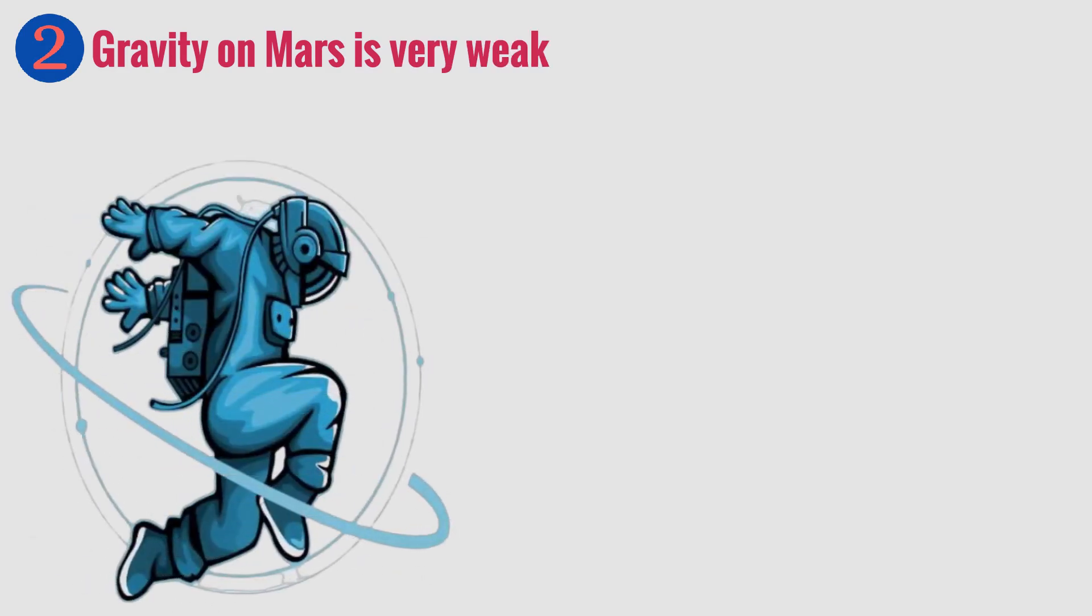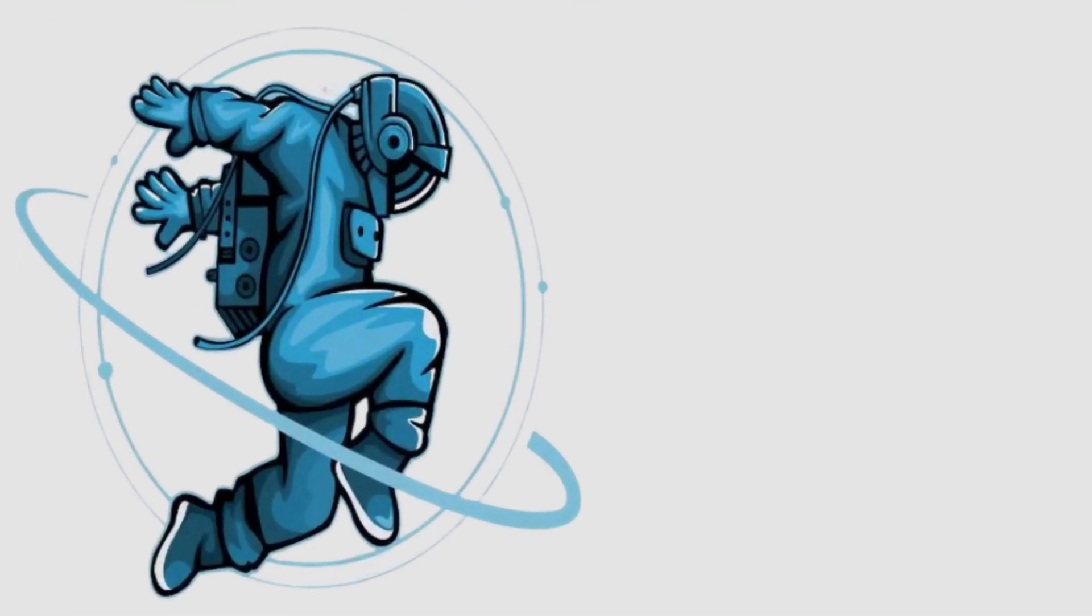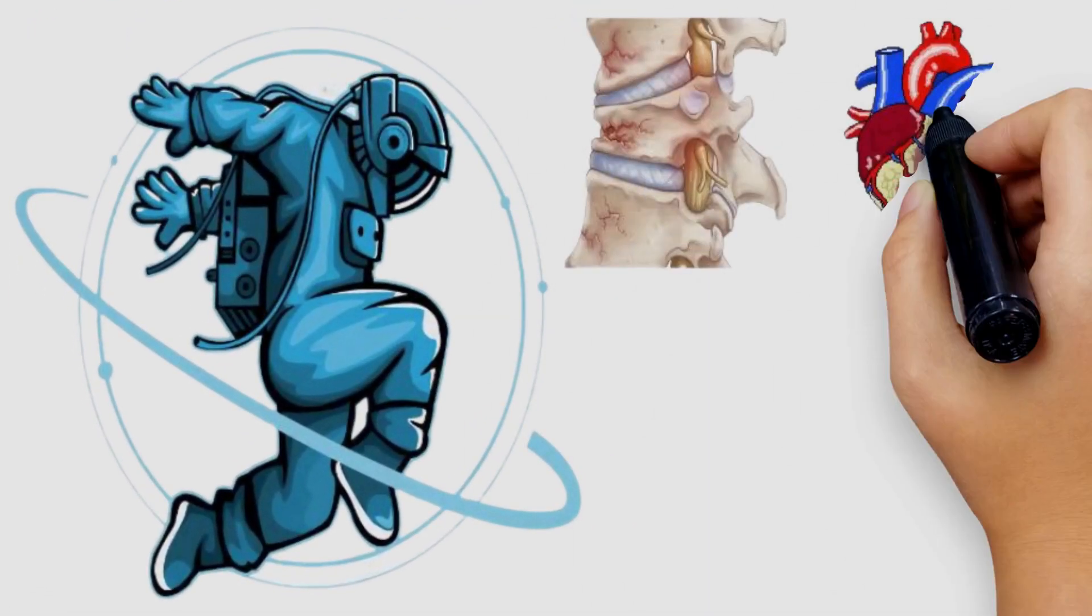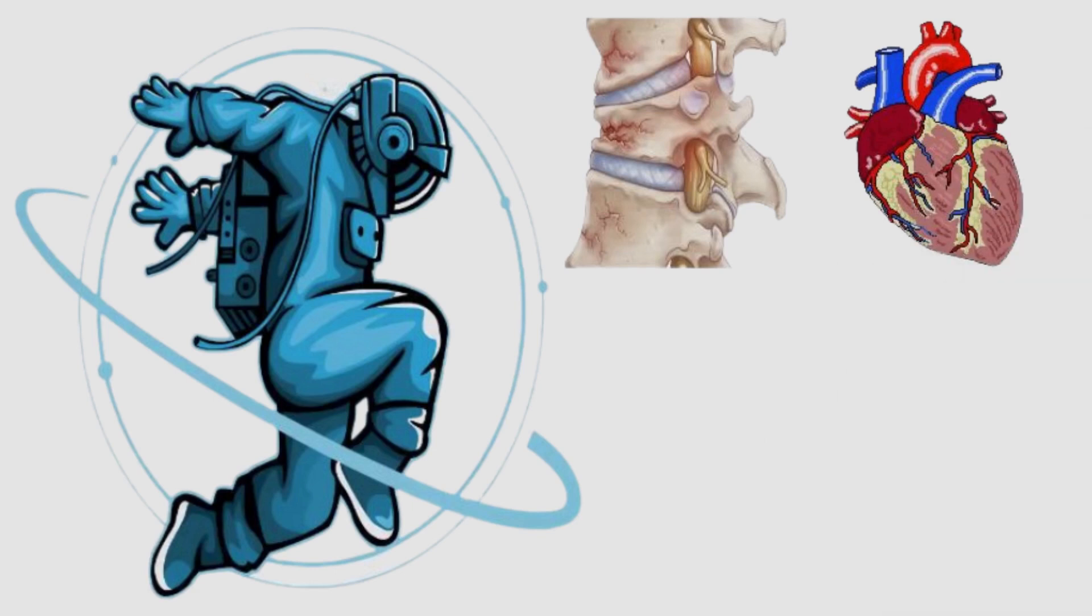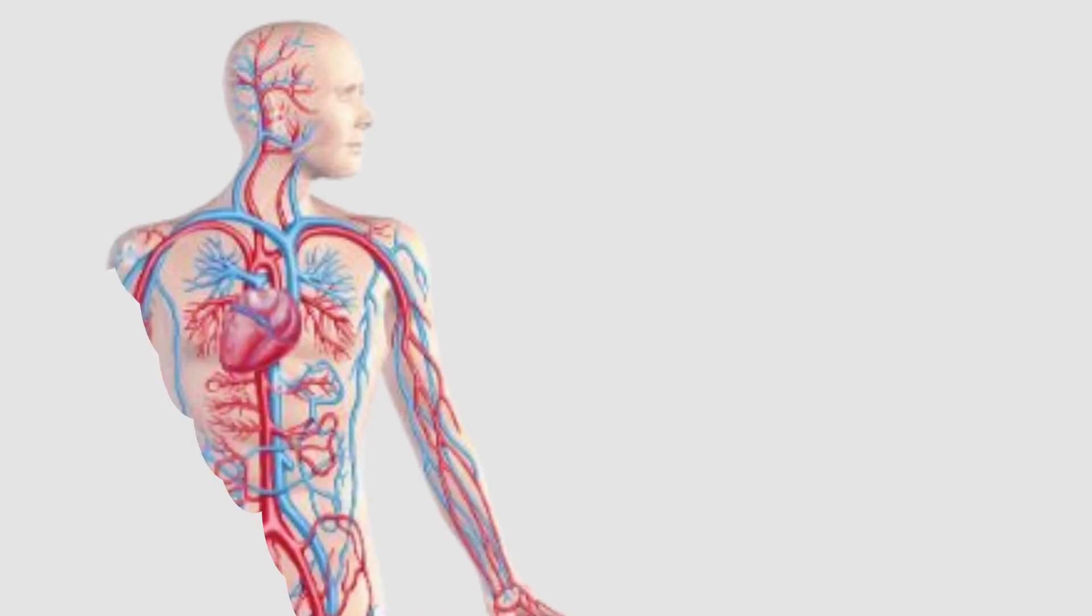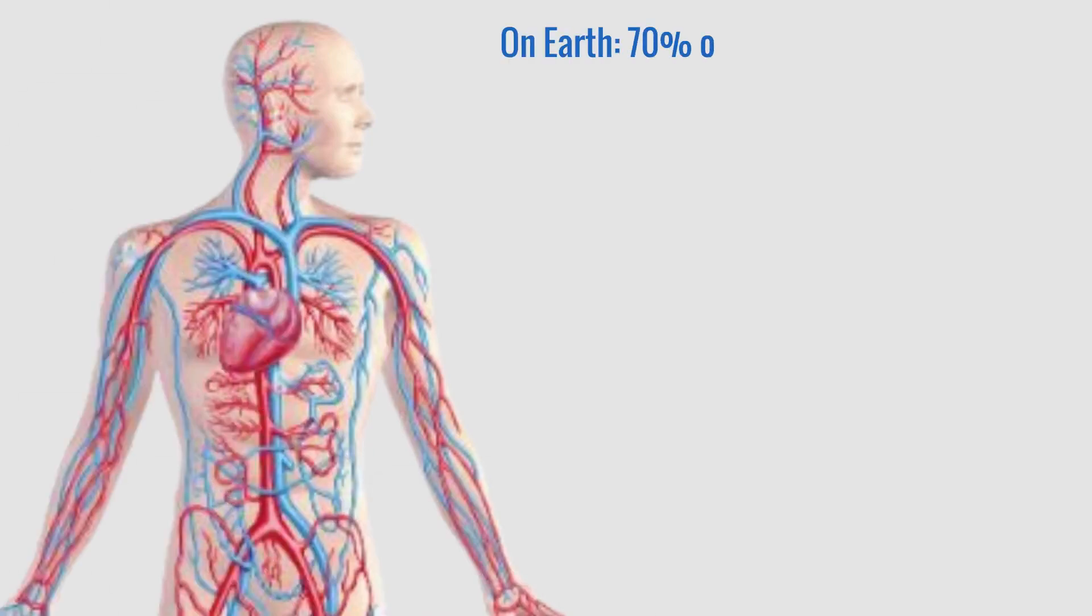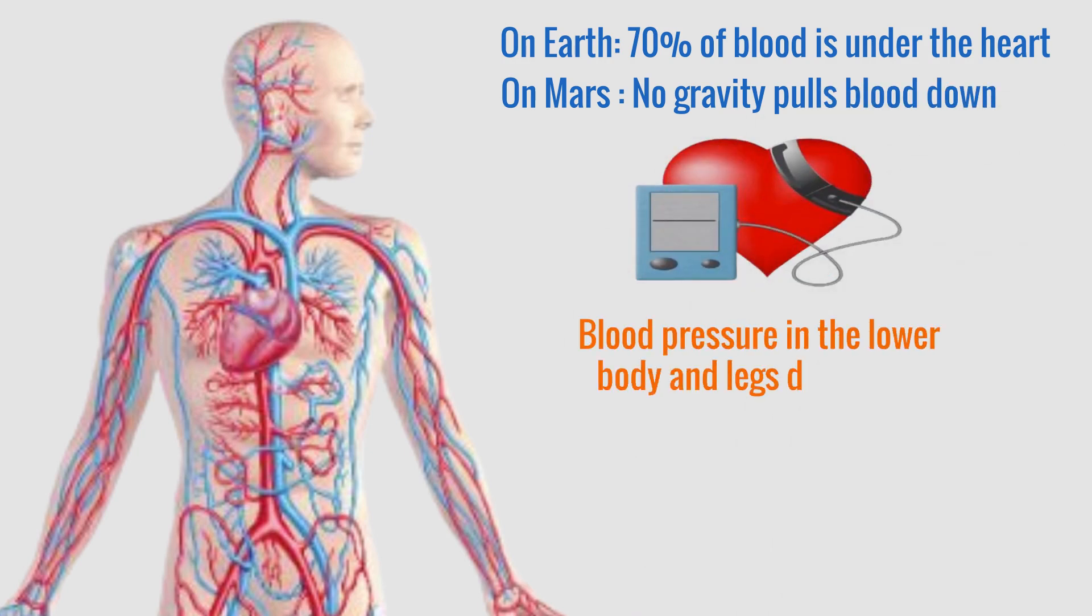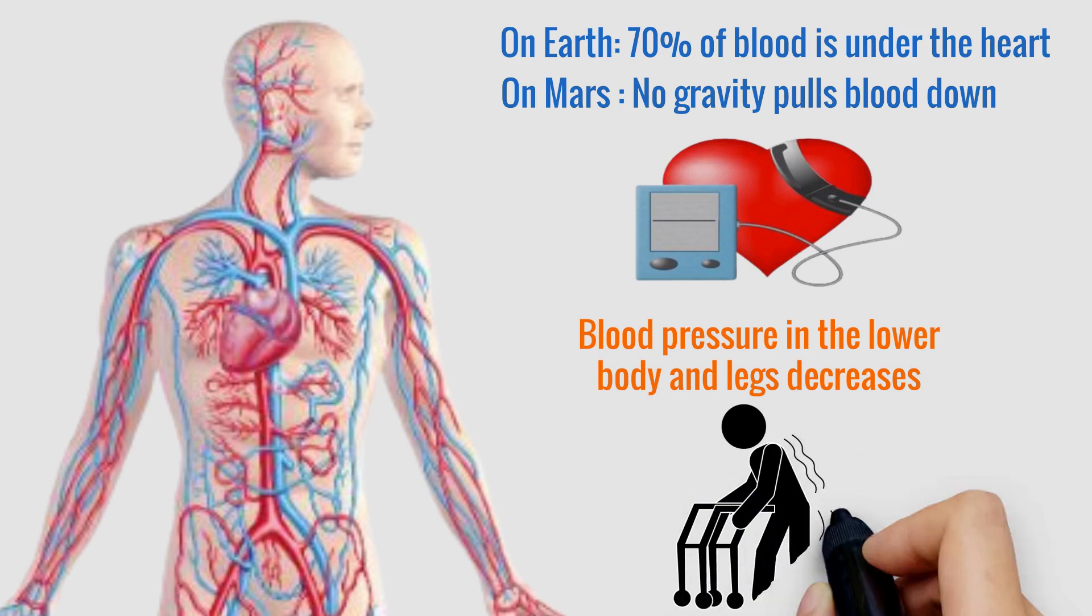Next, another problem to overcome is that gravity on Mars is very weak. Mars gravity is only close to 38% of Earth's gravity. The difference in gravity can negatively affect human health by weakening bones and muscles and causing cardiovascular problems. But cardiovascular effects are complex. On Earth, the body's blood is 70% below the heart but in the absence of gravity there is nothing to pull the blood down. This causes the pressure in the lower body and legs to drop significantly. As a result, the legs become weak due to loss of muscle and bone mass.